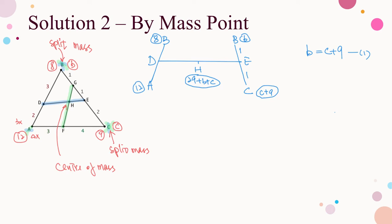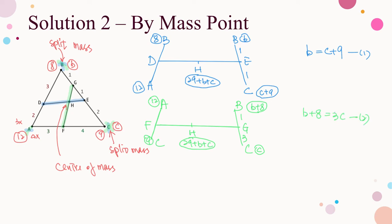Similarly, consider the total mass at H given by the sum of masses of F and G. The mass of F is the sum of mass of A (12) and the partial mass of C (9). The mass of G is the sum of the full mass of B (b + 8) and the partial mass of C (c). The total mass at H is again 12 + 9 + b + 8 + c, that is 29 + b + c. By the ratio BG to GC, which is 1 to 3, we set up the second equation: b + 8 equals 3c, equation 2.